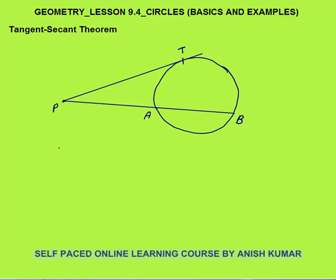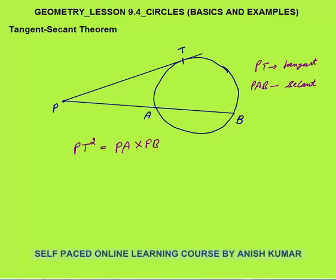The tangent-secant theorem states that if PT is your tangent and PAB is a secant, then PT squared will always be equal to PA into PB.